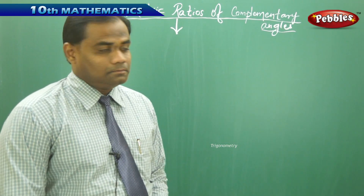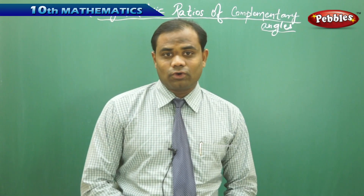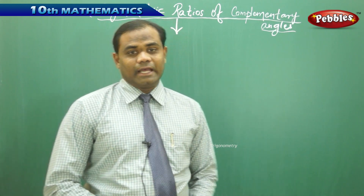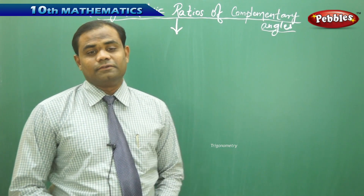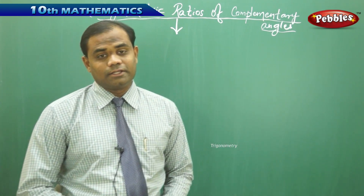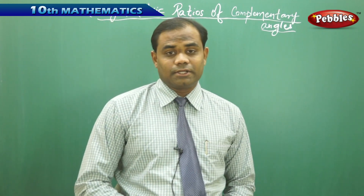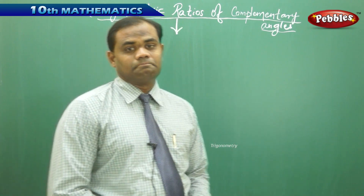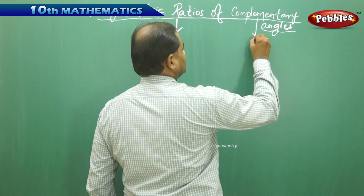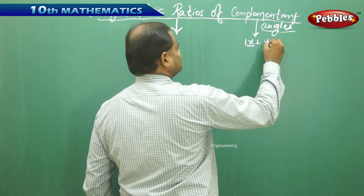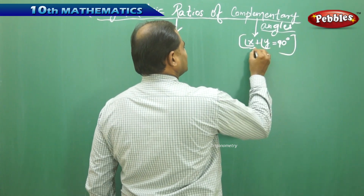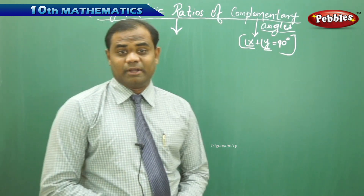This session is about the trigonometric ratios of complementary angles. Complementary angles are two angles whose sum is 90 degrees. If the sum of two angles is 180 degrees, we say they are supplementary angles. So if angle x plus angle y equals 90 degrees, then x and y are said to be complementary angles.